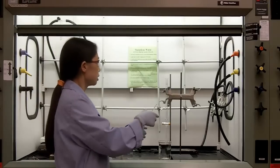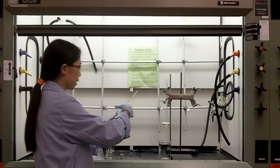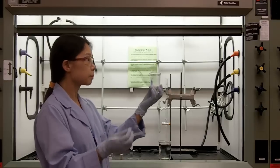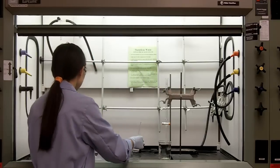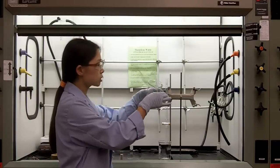To do the column chromatography, we need to start with the packing of the column. You start with 5 grams of silica gel, put it in a beaker, and then put about 50 ml hexane to make a slurry.